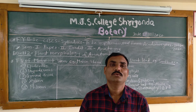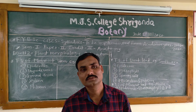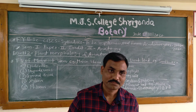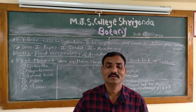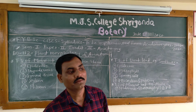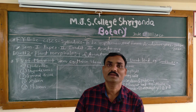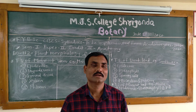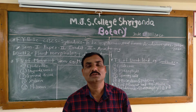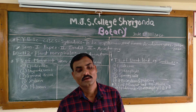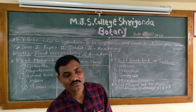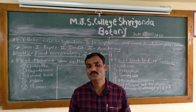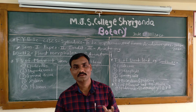In today's video we are going to learn about Credit 2, that is anatomy — the internal structure of the primary plant body. In that primary plant body we have completed the anatomy of dicot root, monocot root, and dicot stem.